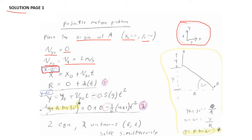For the X direction, we use the kinematic relationship: X = X_0 + V_X0 × t. Plugging in, X equals R (the horizontal distance from A to B), X_0 = 0, and V_X0 = 2 m/s, giving us Equation 1: R = 2t. This has two unknowns, R and t, so we move on to the Y direction.